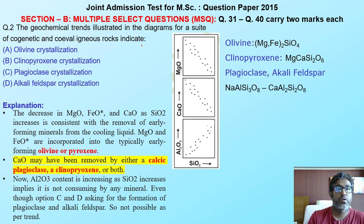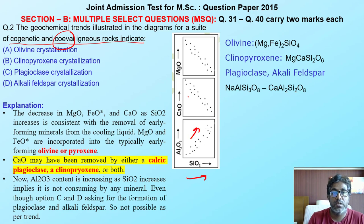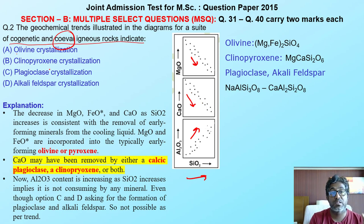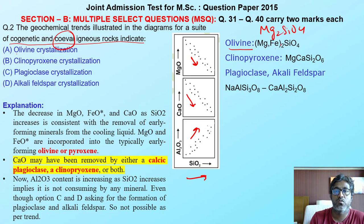The geochemical trend illustrated in the diagram for a suite of co-genetic and co-eval igneous rocks — co-genetic means the same genetic origin, co-eval means the same age. You can see that as SiO2 content increases, Al2O3 increases, whereas CaO and MgO decrease. Based on this chart, I have to identify whether olivine, clinopyroxene, plagioclase, or alkali feldspar will crystallize. The formula for olivine is (Mg,Fe)2SiO4 and for clinopyroxene it is MgCaSi2O6.